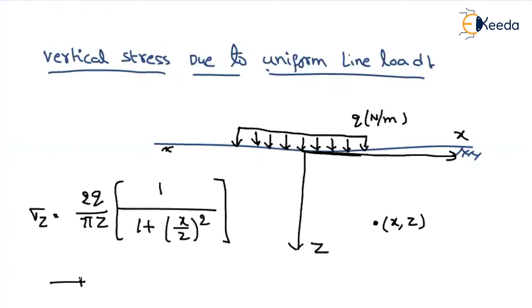Now, this formula has been derived by using elastic theory, and this formula can be applicable for any type of soil. Let us say if you are finding at X equal to 0, that means along the coordinate axis Z, the equation will become sigma Z equal to 2Q divided by pi Z. So by using these two relations, we can find out stress at any point if there is a line load acting on the soil. Let us see some example on that.